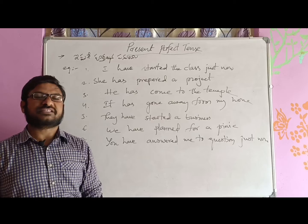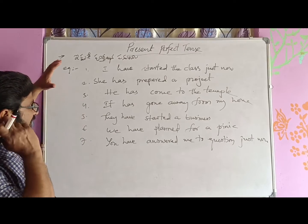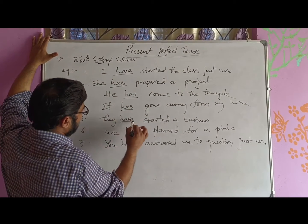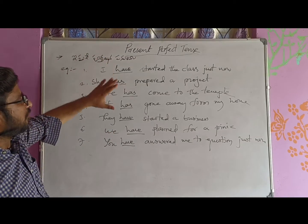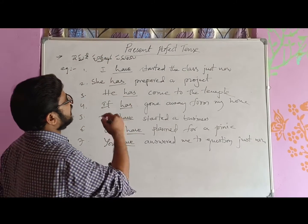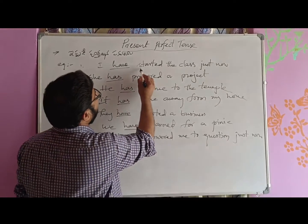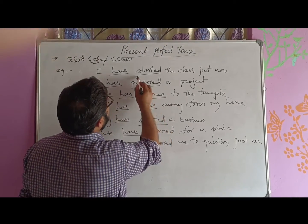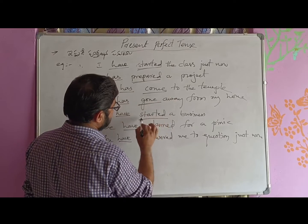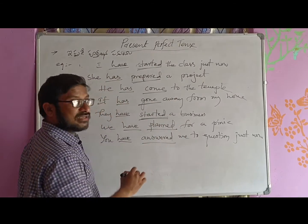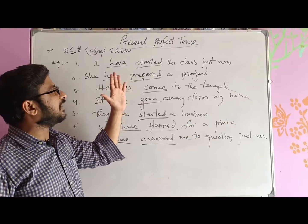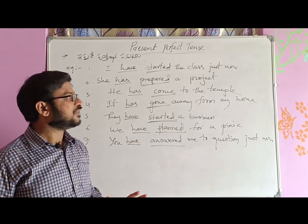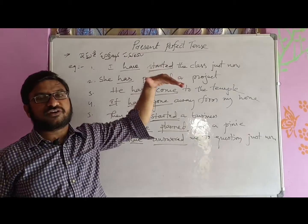You have answered me to my question just now. So if we observe the sentences in Present Perfect Tense, we have has, have, has, have, have, have. This means we have auxiliaries, and after this auxiliaries, verbs are in past participle form: started, prepared, come, gone, started, planned, answered. These are all past participle, third form of the verb.